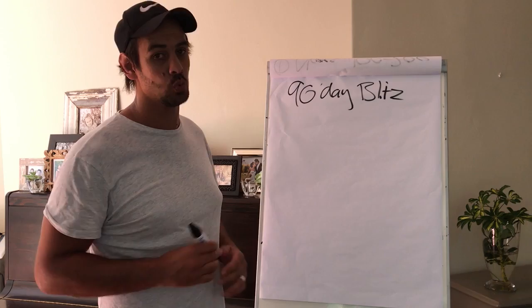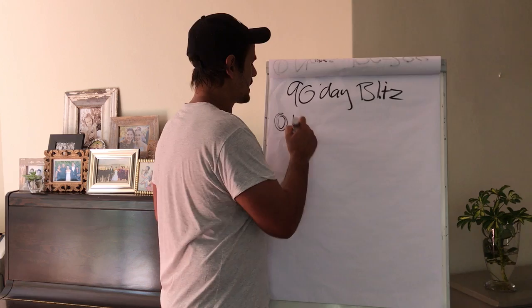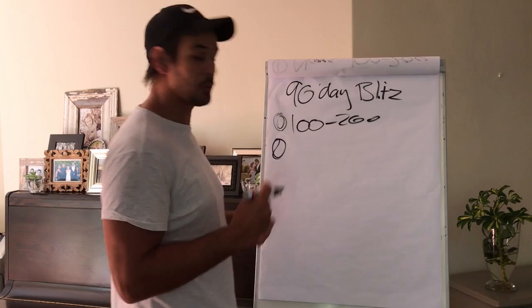Number one is we want to put a name list together of at least 100 to 200 people. Then what we want to do is get in contact with these people, show them the opportunity, show them the presentation.